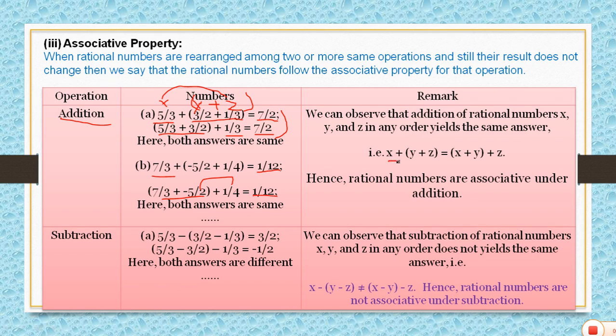So whether we compute x plus (y plus z) or (x plus y) plus z, the result is the same. This means rational numbers follow associative property under addition.